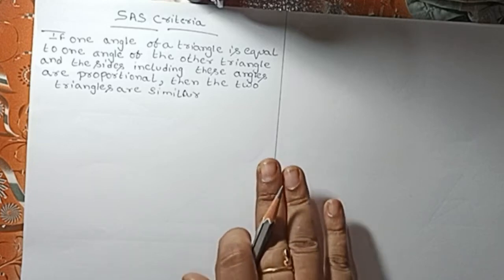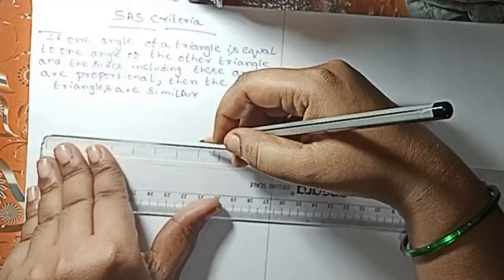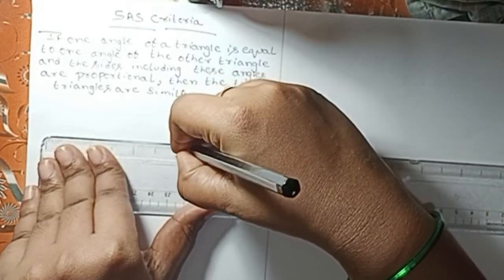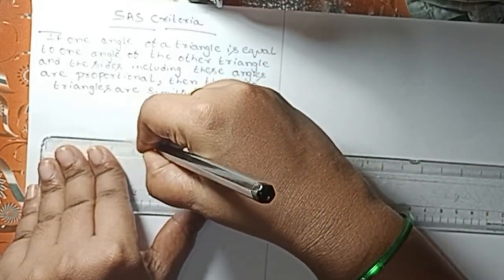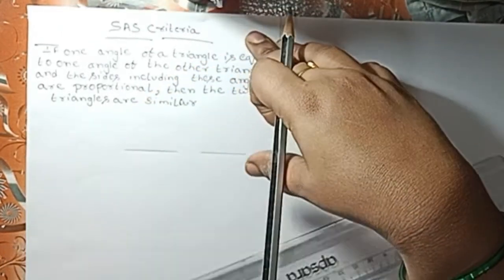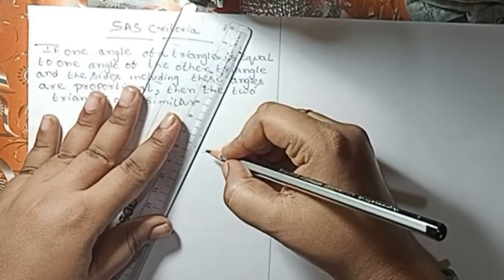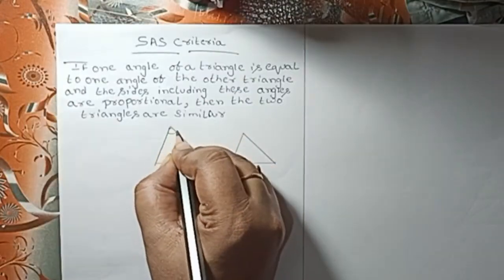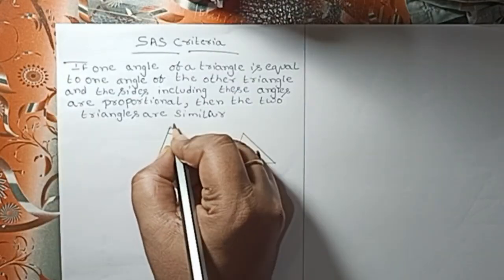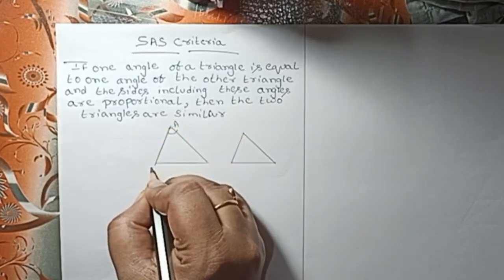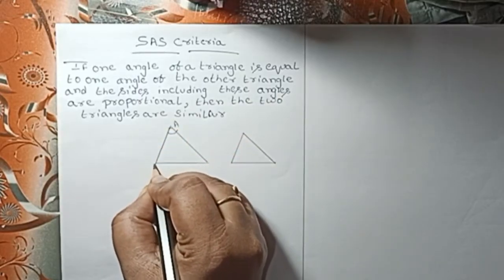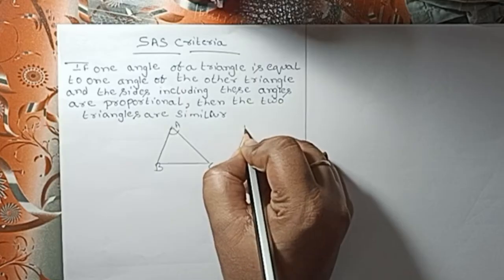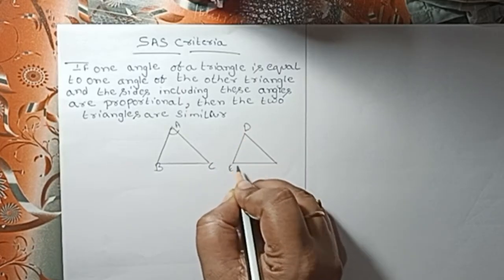Let me draw a triangle. The first triangle has angles A, B, and C. The second triangle has angles D, E, and F.